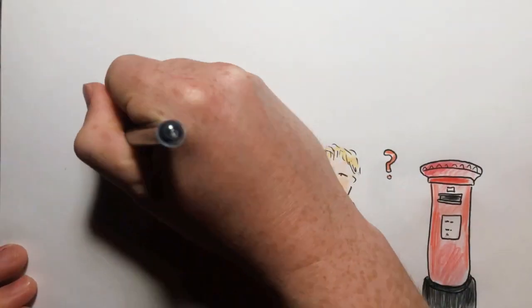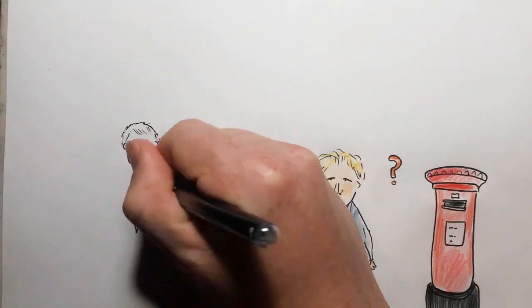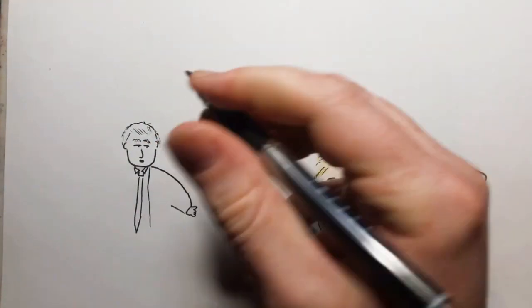If you want my take on it, it's pretty simple to tell the burqa and a postbox apart. One is for first-class male, the other is for second-class females.